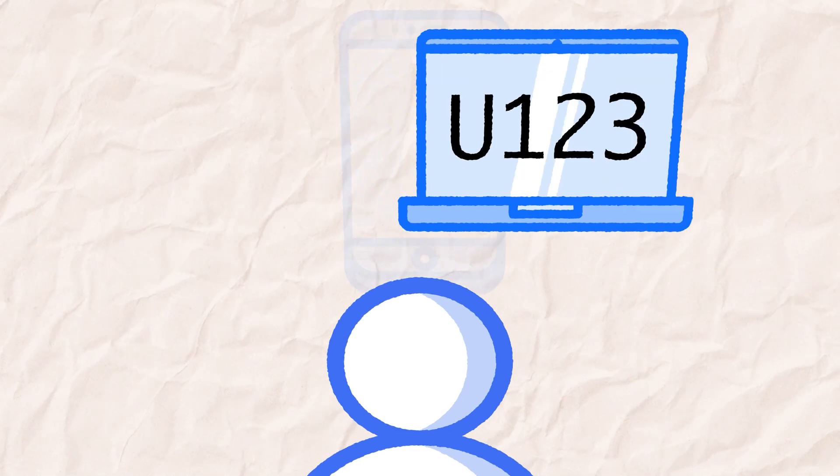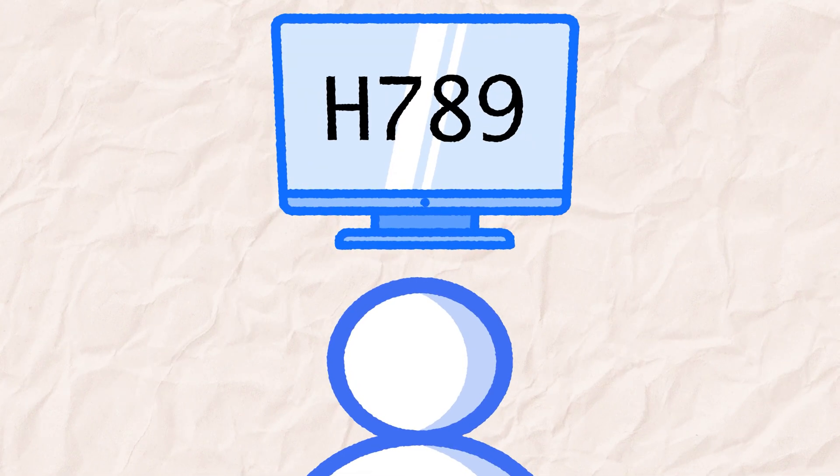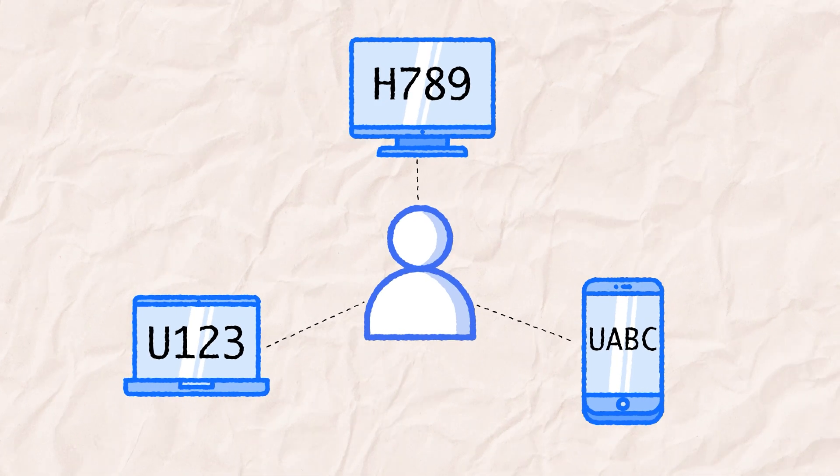Okay, back to identity resolution. Here's the breakdown: a person visits a website, which drops a first-party cookie to tag them as U123. Next, the person pulls up an app on their phone that grabs their device ID and tags them as UABC. Then they turn on their connected TV, which checks their IP address and tags them as H789. These identifiers are then connected — or resolved — to create what's called an identity graph, also known as an audience graph. It's basically a database with a list of people or households and any ID or piece of identity-related information connected to those individuals.